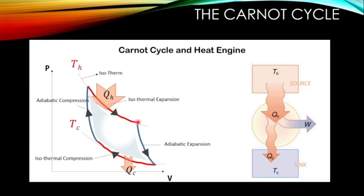Once it completes isothermal expansion, it will then undergo an adiabatic expansion. From the name, adiabatic means there is no exchange of heat happening, so it will just be expanding. But as there is no heat exchange, the temperature will be varying — from a high temperature it will vary down to the low temperature, theta 2.